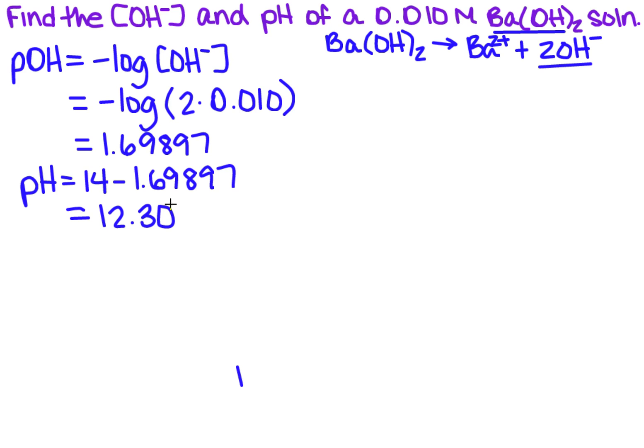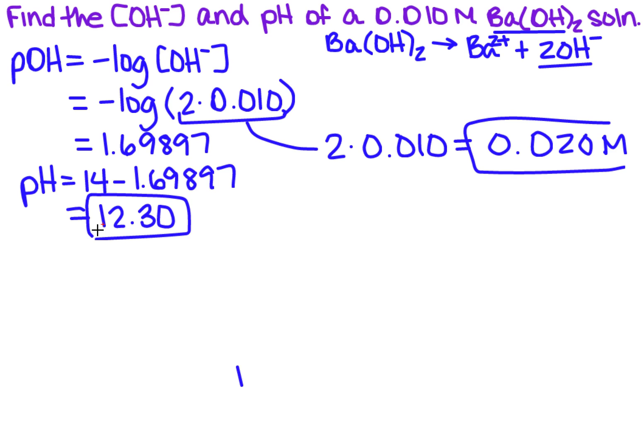So did we find the concentration of the OH? Sure we did, indirectly. When I found this right here, that told me the concentration. Two times 0.010 is the concentration of the hydroxide ion, which is 0.020 molar. So we have 0.020 M as the concentration, and 12.30 as the pH.